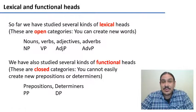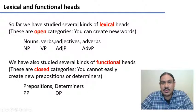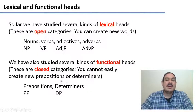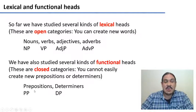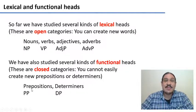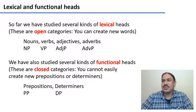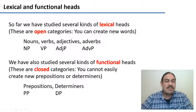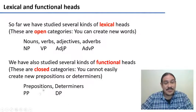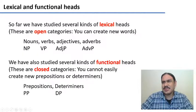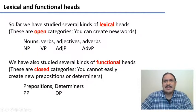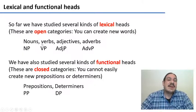Lexical categories are open categories in that you can easily create new nouns and new verbs — and we do it all the time. Functional categories are closed categories. You can't easily make new prepositions for English; this happens very sporadically. One that has been created recently is 'because' as a preposition, like 'I do this because pizza.' But it's very difficult to create new prepositions and new determiners — new determiners only happen every couple hundred years, whereas you can create nouns every day.